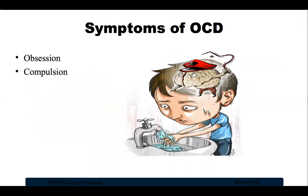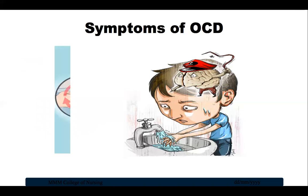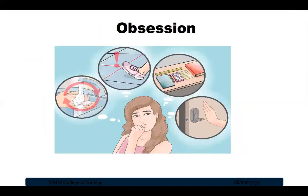People with OCD may have symptoms of obsession, compulsion, or both. This interferes with all aspects of life such as work, school and personal relationships. Obsessions are recurrent and persistent thoughts, impulses or images that cause distressing emotions such as anxiety or disgust. Many people with OCD recognize that these thoughts or impulses are a product of their mind and not reasonable, however the distress caused by intrusive thoughts cannot be resolved by any logical reasoning.